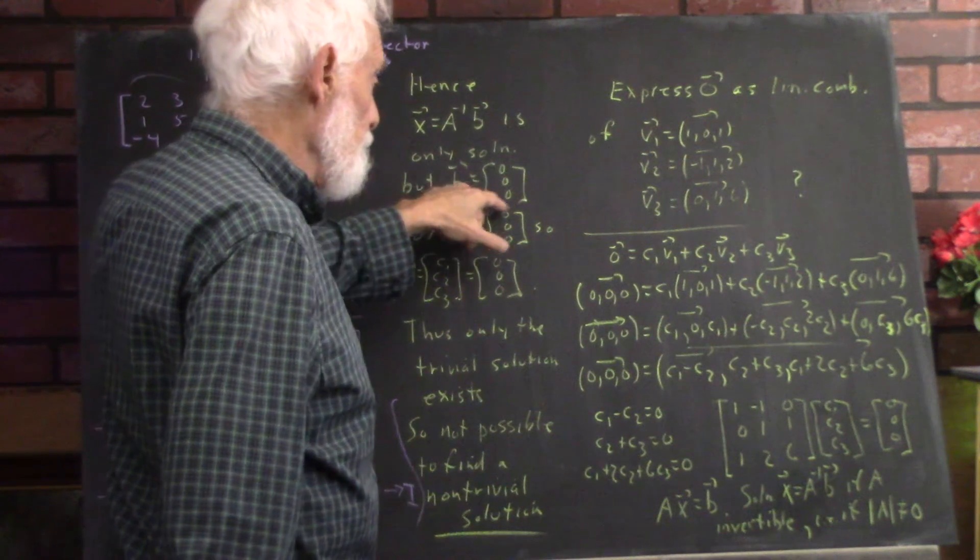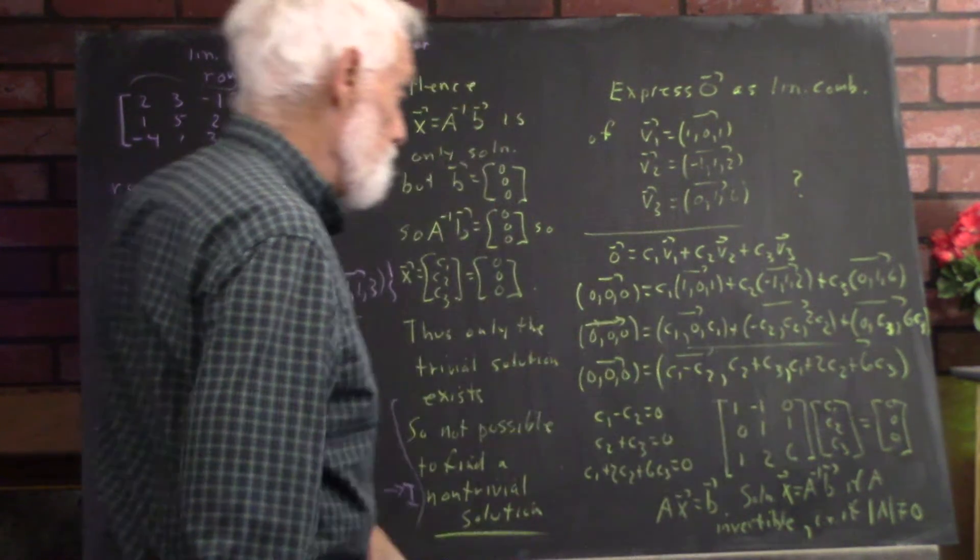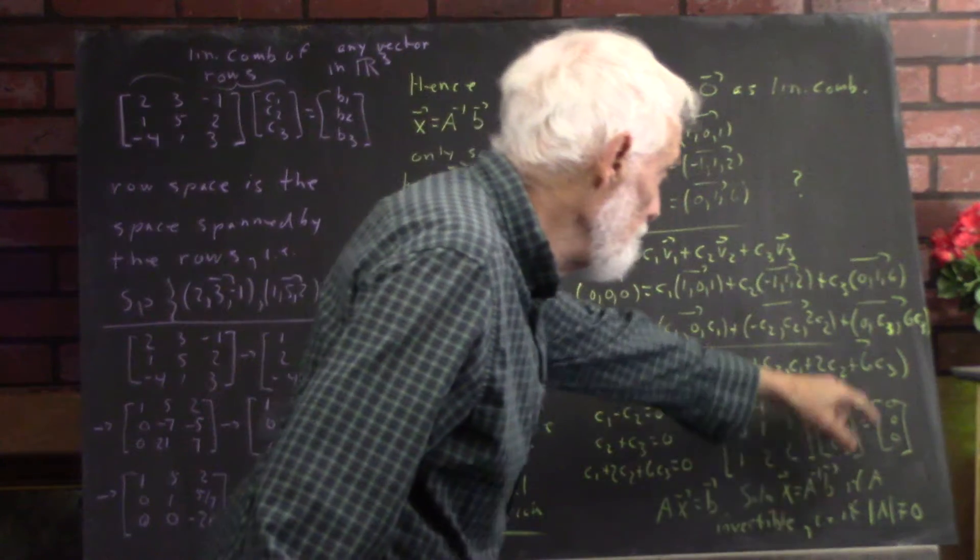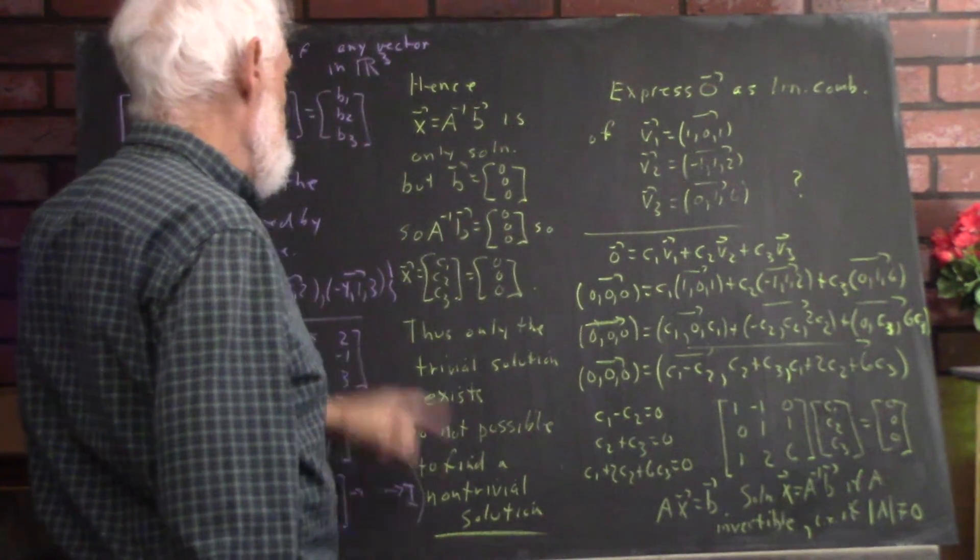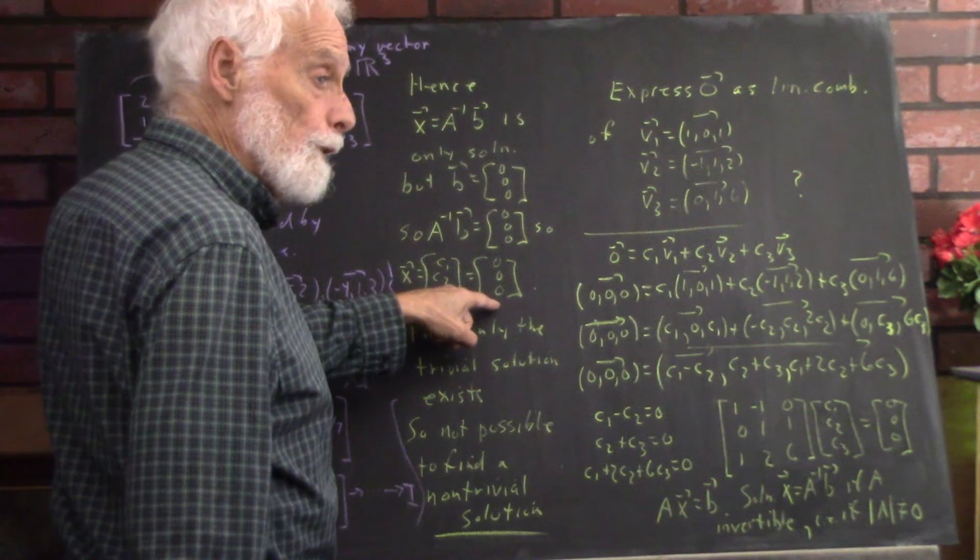However, b in this case is the zero vector. So, ax equals b but b is the zero vector. So, a inverse b is the zero vector. So, x has to be the zero vector.